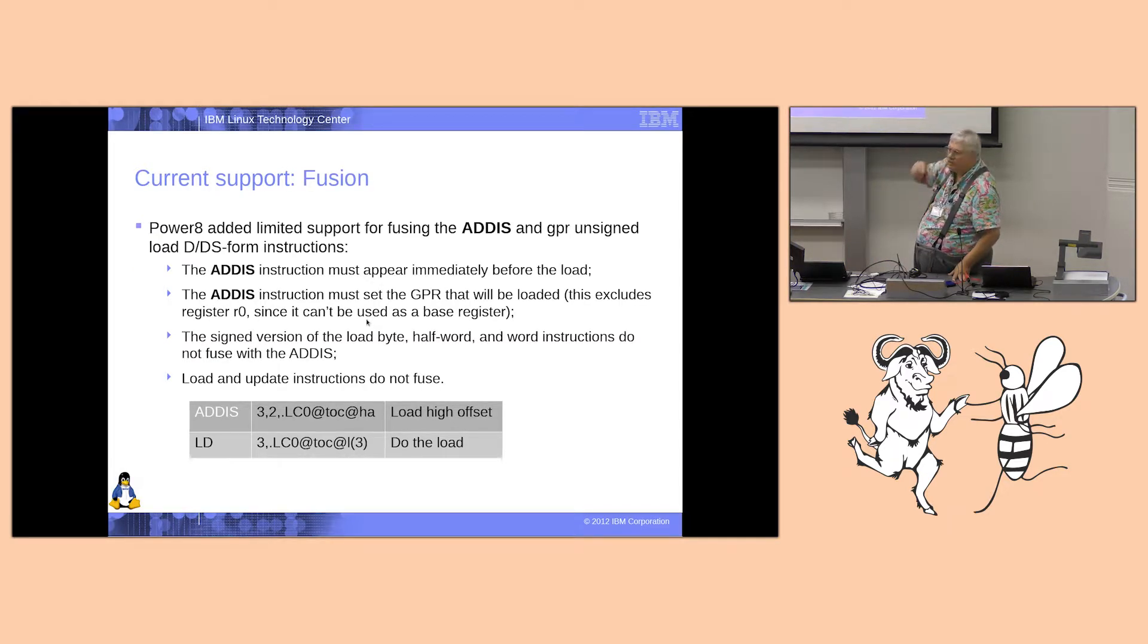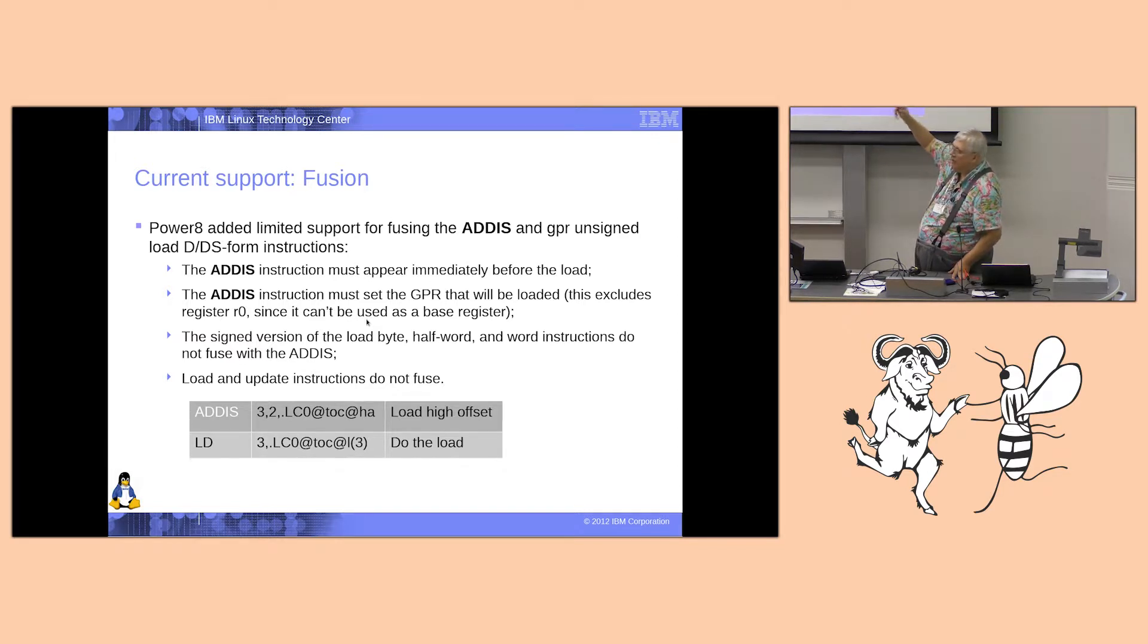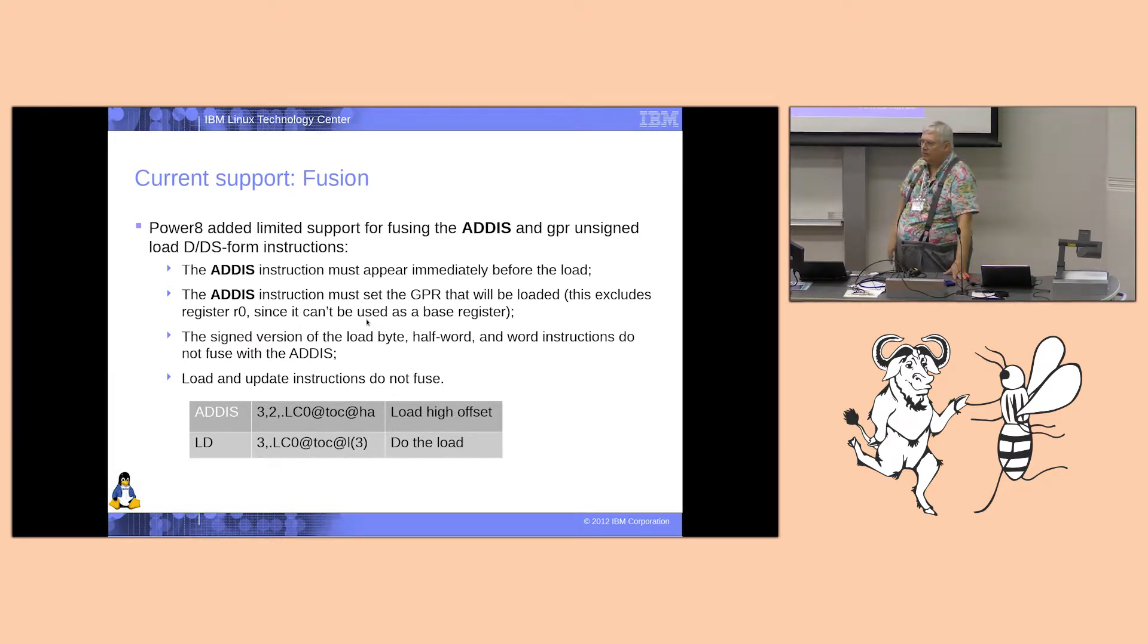Right, currently IBM uses a fairly simplistic numbering system. Power seven, power eight, power nine, so forth. Power eight was about three years ago, two, three years ago. And it added instructions for, added what we call fusion. It uses the same instructions. Power eight added additional instructions.